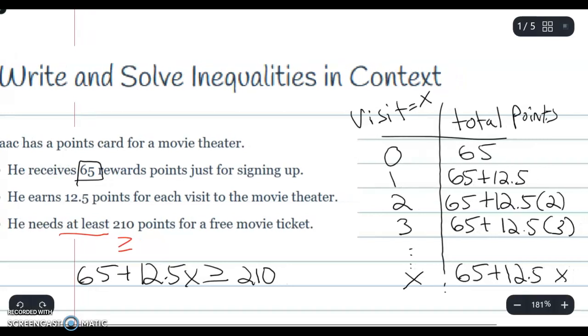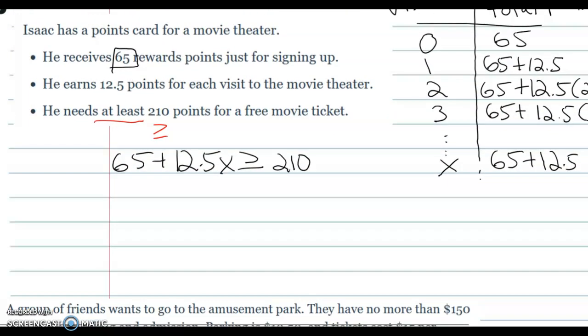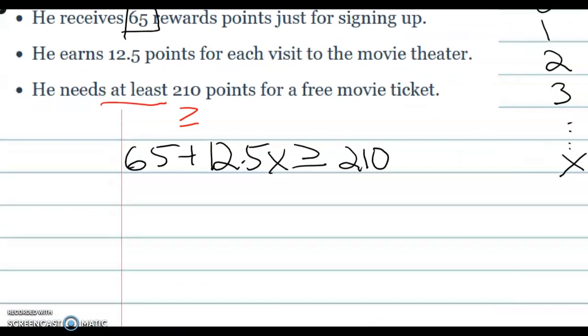Now once we get that set up, all we got to do is just solve the inequality. That's a two-step inequality. I'm going to zoom in a little bit here. I am going to subtract 65 on both sides.